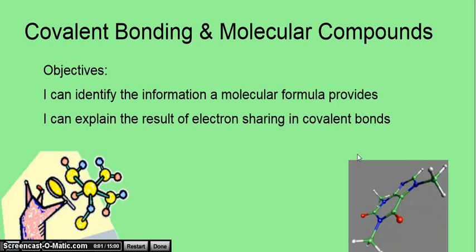Today we will be talking about covalent bonds and how they form molecular compounds. The goal today is to be able to explain how the formation of a covalent bond is different from the formation of an ionic bond, as well as how some of those properties differ between the substances because of the different formation of the bonds.